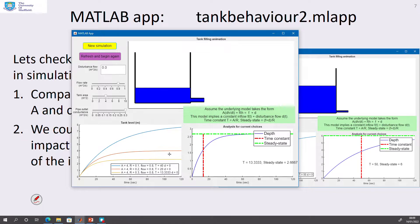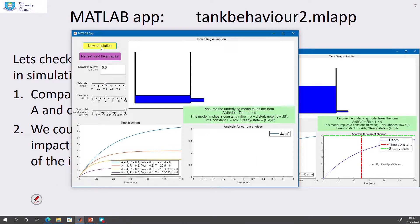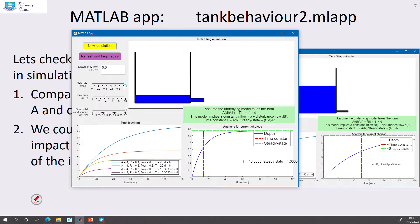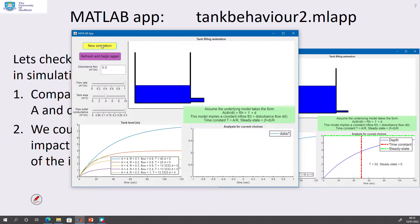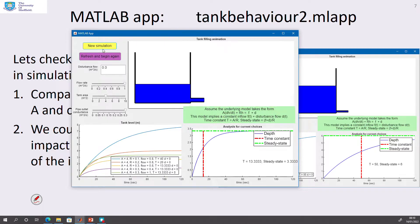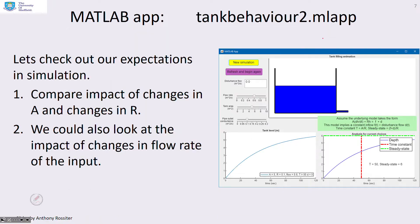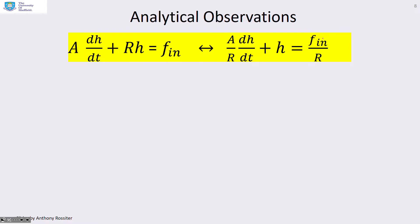Now let's see the impact of changing the flow rate. Changing from 0.8 to 0.4, the steady state gets much smaller. Taking the flow rate up to 1, the steady state gets bigger. So changing the flow rate changes the steady state, but notice it has no impact on the time constant. Changing the flow rate does not change the time constant, but it does change the steady state.